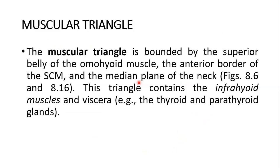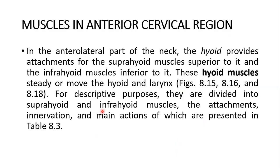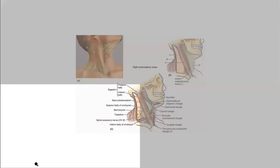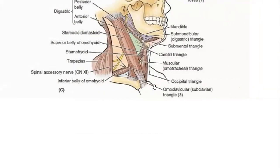Then the last triangle — this is the muscular triangle. It is bounded by the superior belly of the omohyoid, the anterior border of the sternocleidomastoid, and the median plane of the neck. This contains the infrahyoid muscles and also the thyroid and the parathyroid glands. You can see from this diagram: this is the muscular triangle, embedded in between. This is the superior belly of the omohyoid; anteriorly is the sternohyoid; and posteriorly is the anterior border of the sternocleidomastoid. So this is the muscular triangle, also known as the omotracheal triangle.